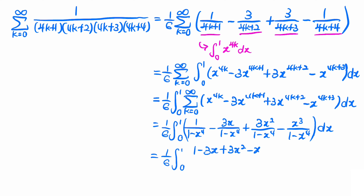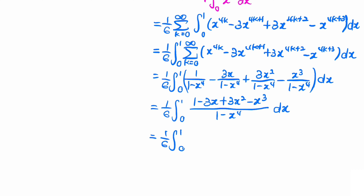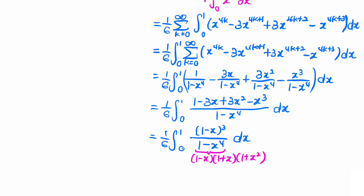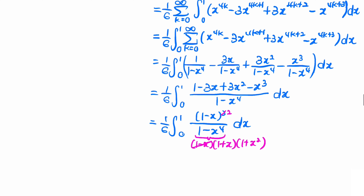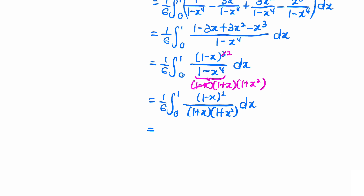We have the following expression, and we see that the numerator equals 1 minus (1-x)³ over (1-x^4) dx. Now let's simplify this: we can factorize the denominator into (1-x)(1+x)(1+x²). We cancel out the (1-x) term from the numerator and denominator, so we are left with 1/6 times the integral from 0 to 1 of (1-x²) over (1+x)(1+x²) dx. This is actually a standard integration, so we first do it by partial fractions.